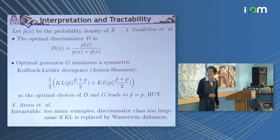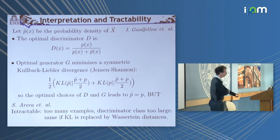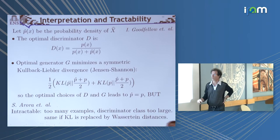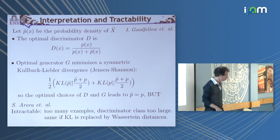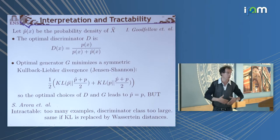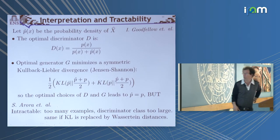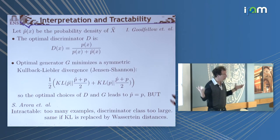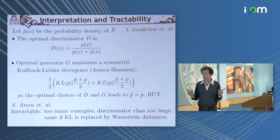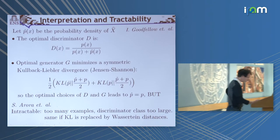Wonderful, but there is a huge but: this is totally intractable. To estimate the distance between two probability distributions in high dimension, in particular strong divergences such as Kullback-Leibler divergence, as shown in a number of publications — in particular the last one of AROA — is totally intractable. The number of examples you need increases exponentially with dimension, and the class of discriminators you need is also much too big. The same holds if you replace the Kullback-Leibler divergence by Wasserstein distance.